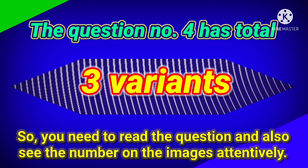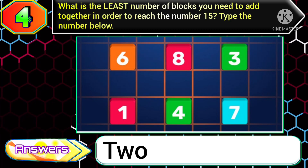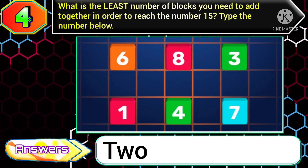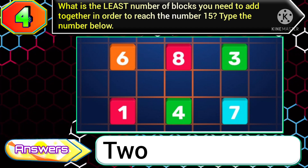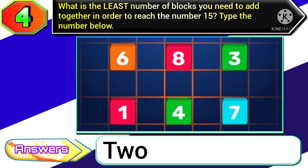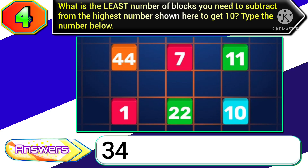Question number 4 has a total of three variants, so we need to read the question and also see the number on the images attentively. In variant 1, if you get the question: what is the least number of blocks you need to add together in order to reach the number 15, and if you get the numbers as 6, 8, 3, 1, 4, 7, then you need to type the answer 2.